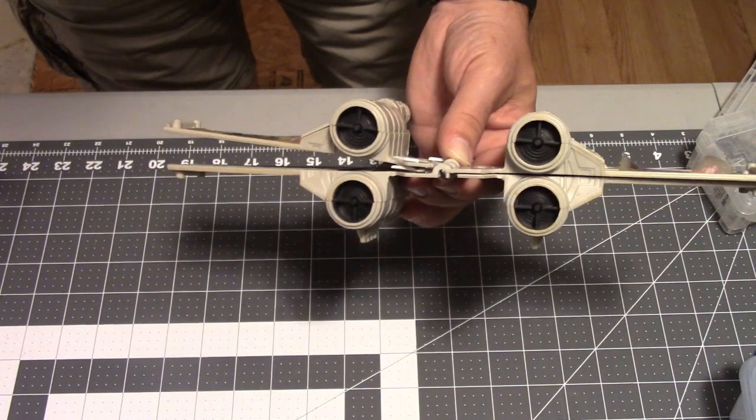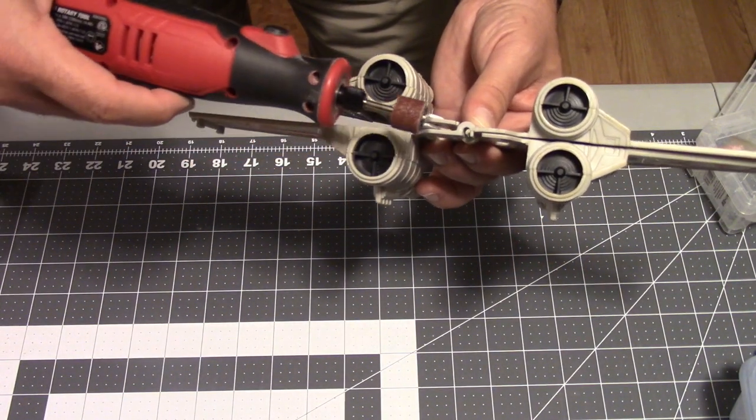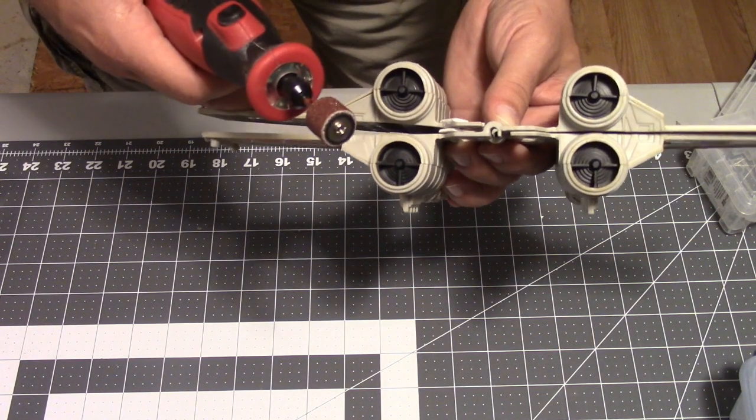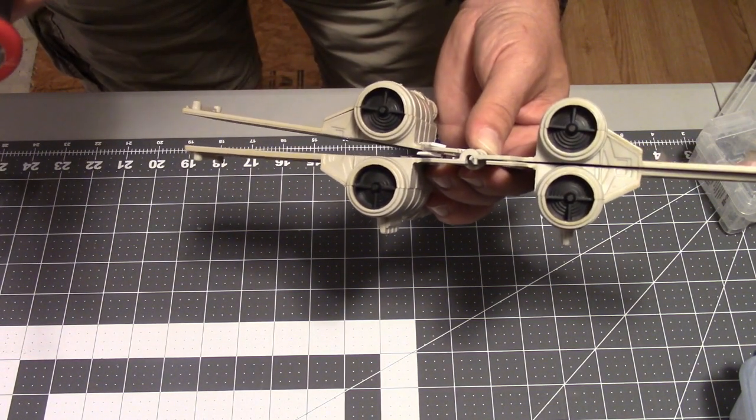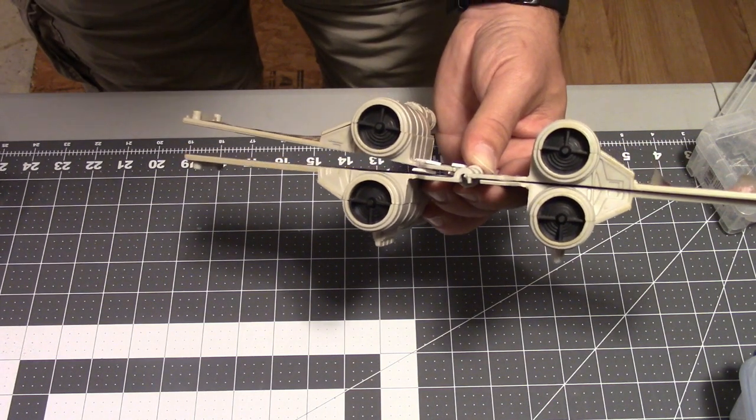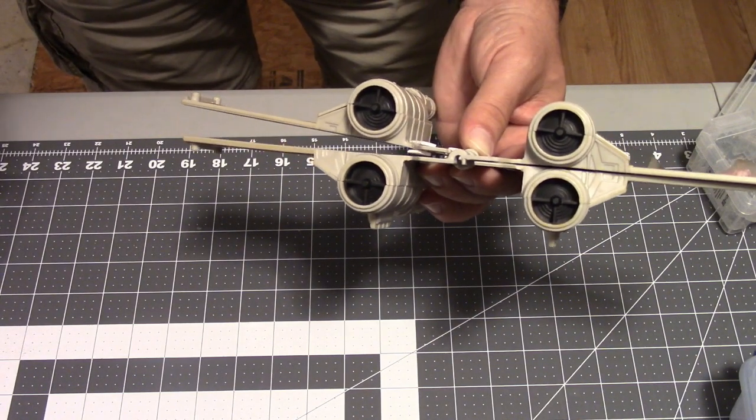So what we're going to do is take our Dremel and I'm just going to sand this down a little bit and see if we can get this to lay a little bit flatter. No need to bore you with the sanding, but I'm going to go sand now. The sanding worked really well on getting this flattened out. The pieces fit a lot nicer now.